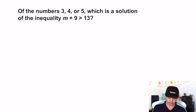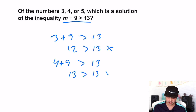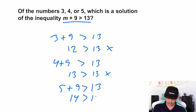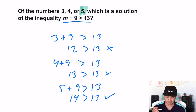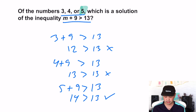Same type of question: which of the numbers three, four, or five is a solution to m + 9 > 13? Three plus nine is twelve — is twelve greater than thirteen? Nope. Four plus nine is thirteen — thirteen is not greater than thirteen. Five plus nine is fourteen — is fourteen greater than thirteen? Yes. So your answer is five. Five is a solution; the rest are not. These questions are interesting because there are actually infinite solutions to inequality problems — five is one of them, six is also a solution, seven is a solution, even 752 is a solution.